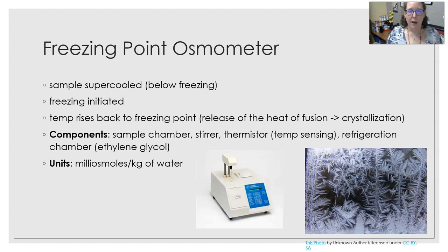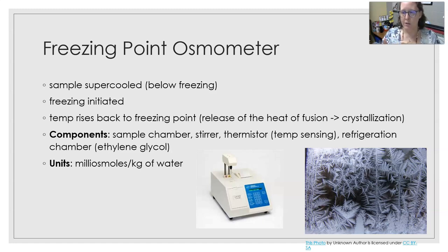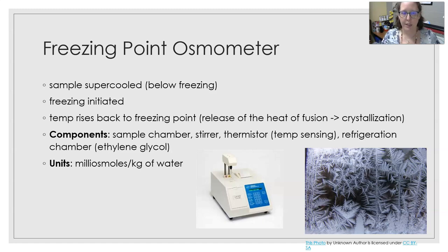The freezing point osmometer works as follows: first, the sample is supercooled — cooled below its freezing point. Then freezing is initiated by a small stirrer; as soon as it vibrates and moves, crystals form. As the crystals form, the temperature rises back to the freezing point and settles there, due to the release of the heat of fusion, which causes crystallization. The components of a freezing point osmometer are the sample chamber, the stirrer, the thermistor (which senses the temperature), and the refrigeration chamber, which contains ethylene glycol to supercool the sample. The result is reported in milliosmoles per kilogram of water.